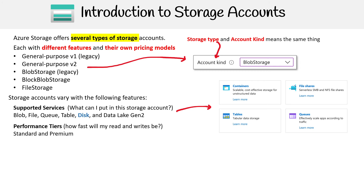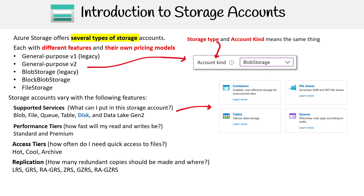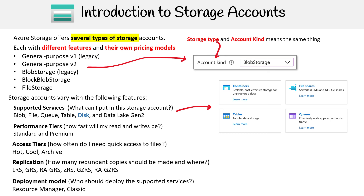For performance tiers, this is how fast you'll be able to do reads and writes — you have Standard and Premium. You have different kinds of access tiers, meaning how often do you need quick access to these files. Then there's replication — how many redundant copies should be made and where. The last thing is deployment models: who should deploy the supported service — Resource Manager or Classic — and in most cases it's going to be Resource Manager.